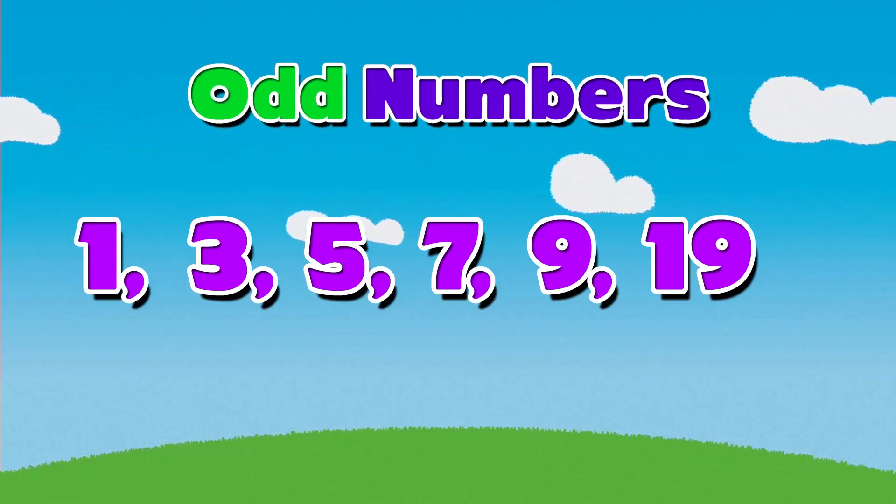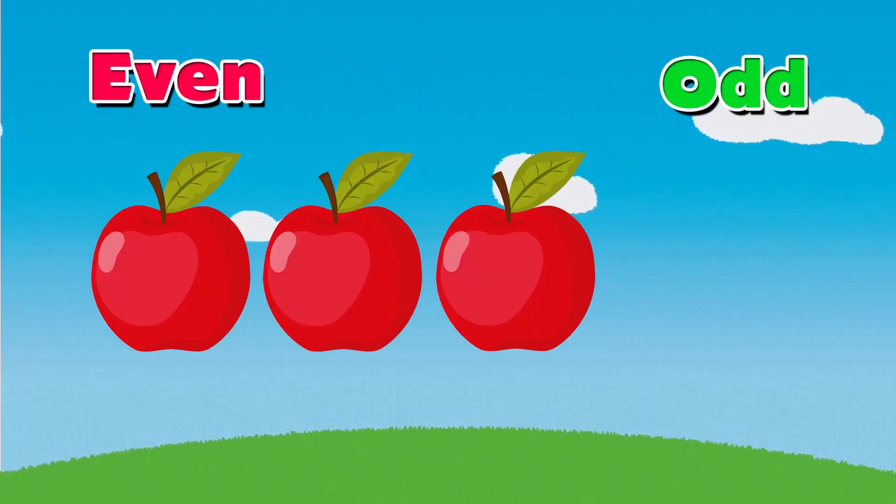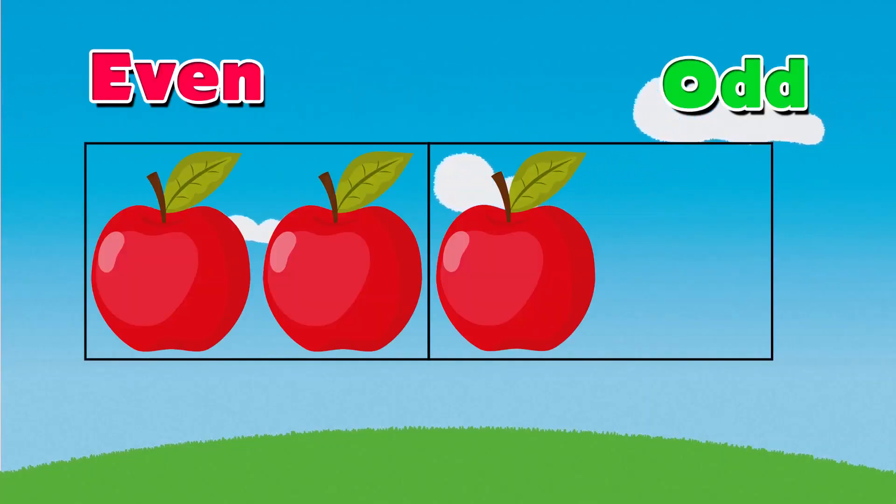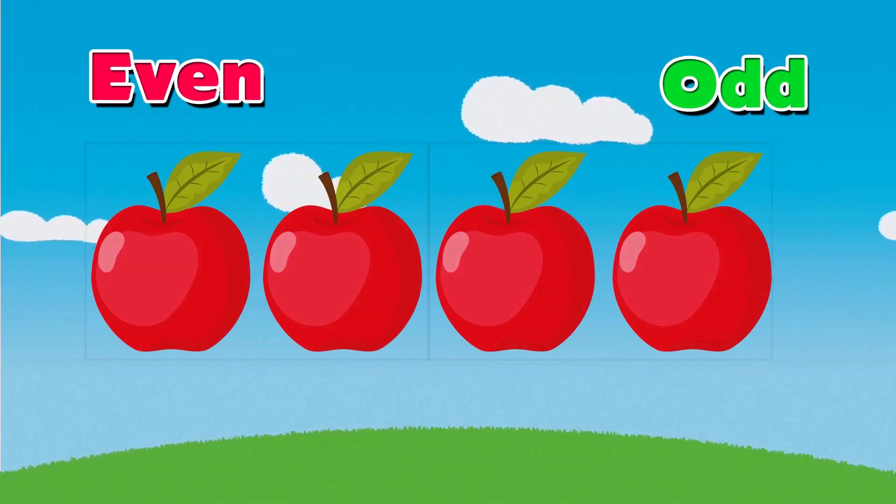One way you can see if a number is even or odd is to try grouping it into twos. If there is one left over, then it is an odd number. If there are no extra numbers, then it is even. Let's try it.